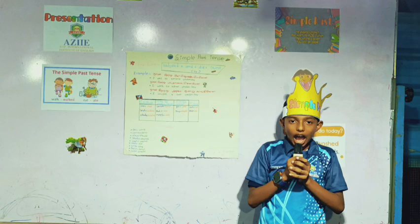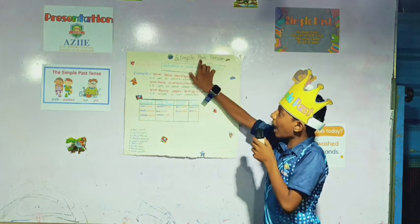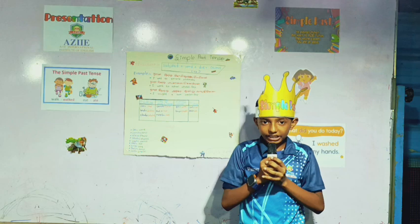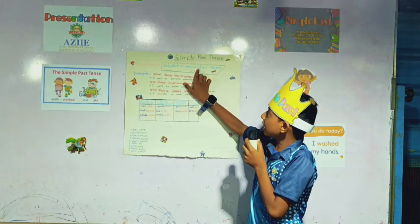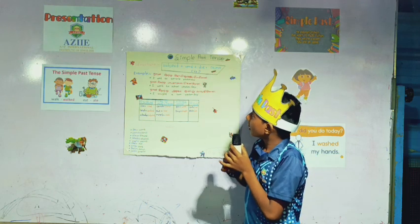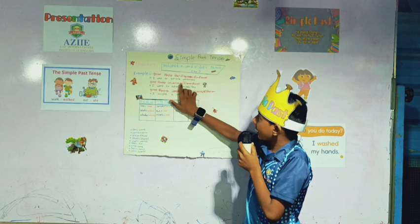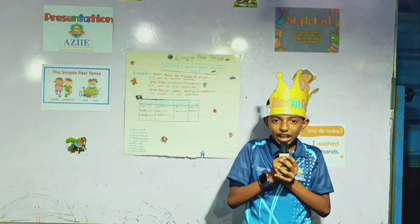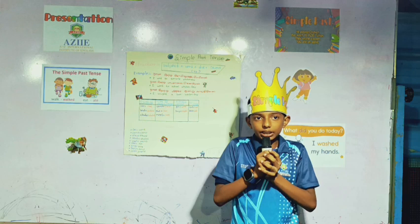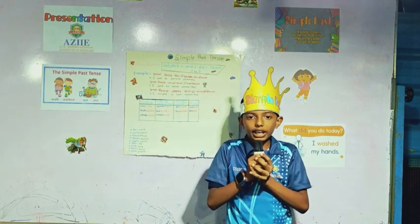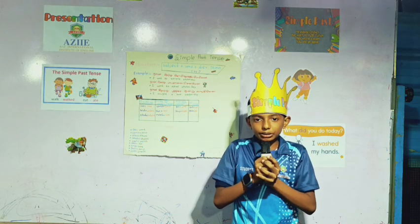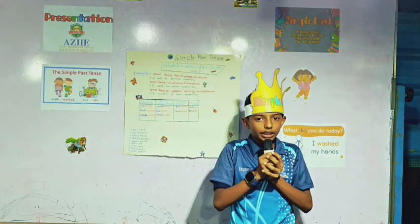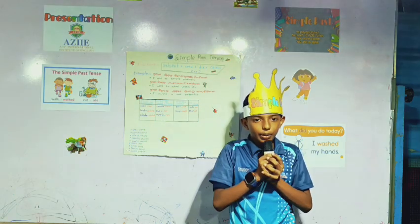Good evening everybody. I am Dorian. Today I am telling about simple past tense. We use simple past tense to tell past events. Structure: subject plus word plus did past plus object. Example: I went to temple yesterday. I went to school yesterday. Simple past song — oh yeah, simple past, believe me, you can study. Subject plus did past plus object in the rest of life. Thank you. Adios.